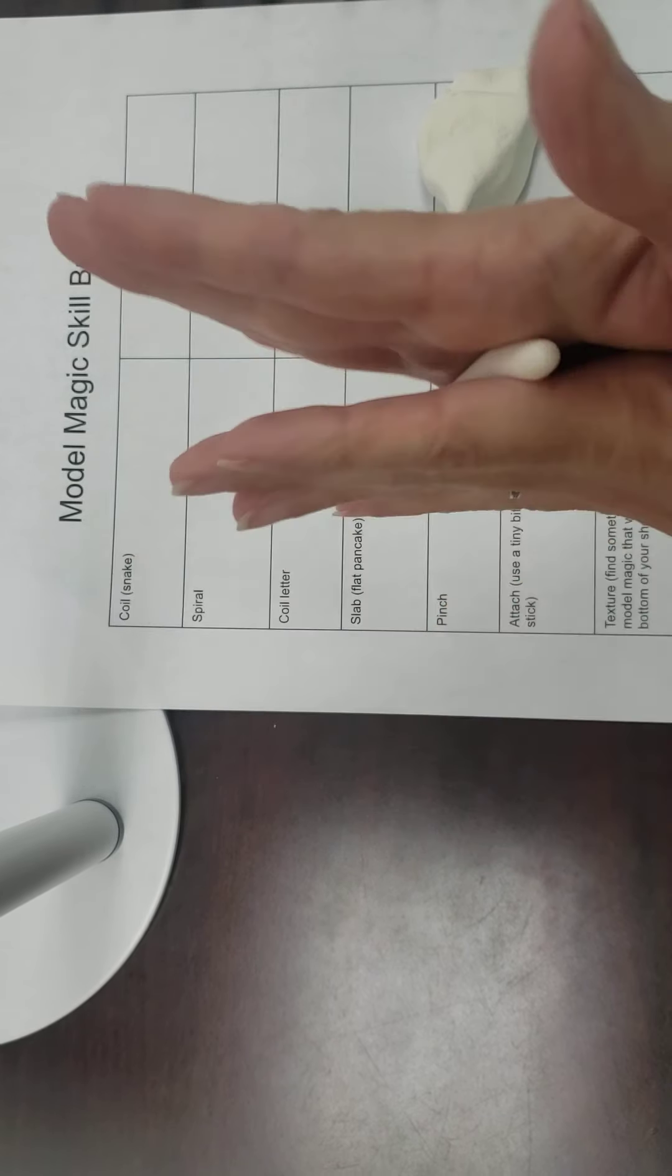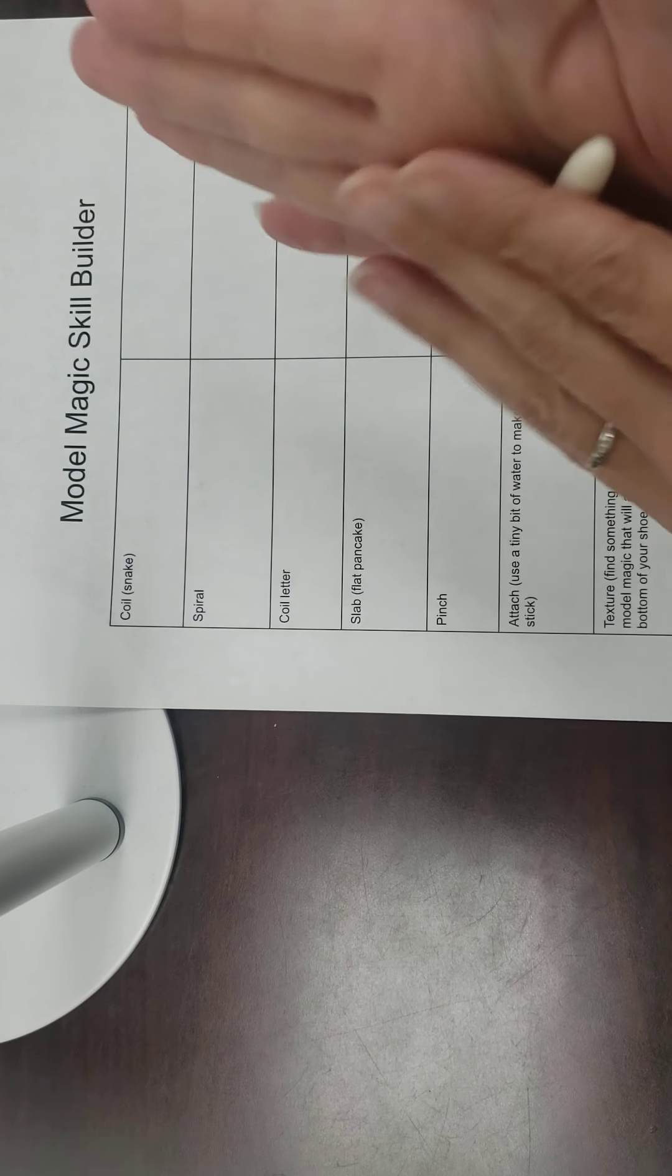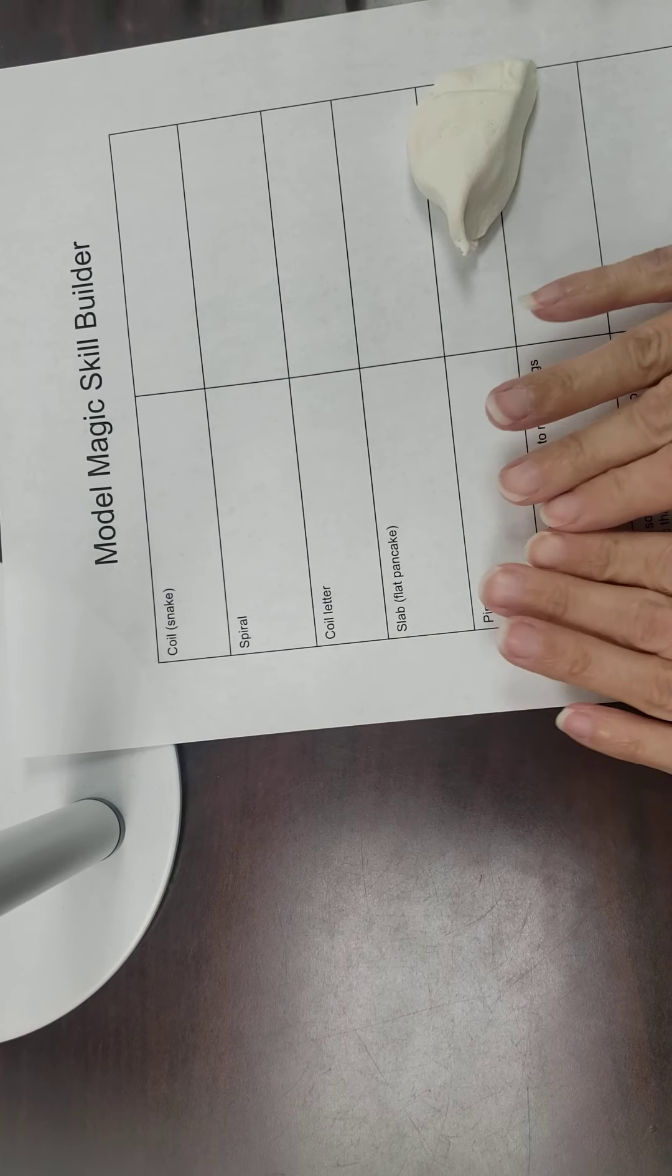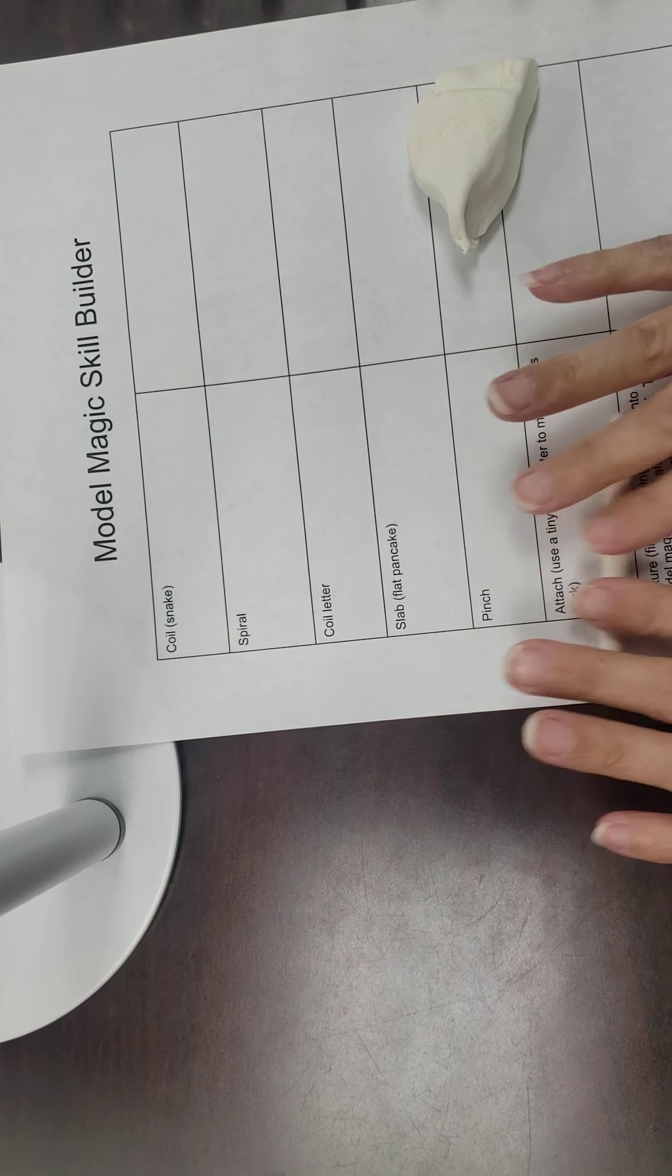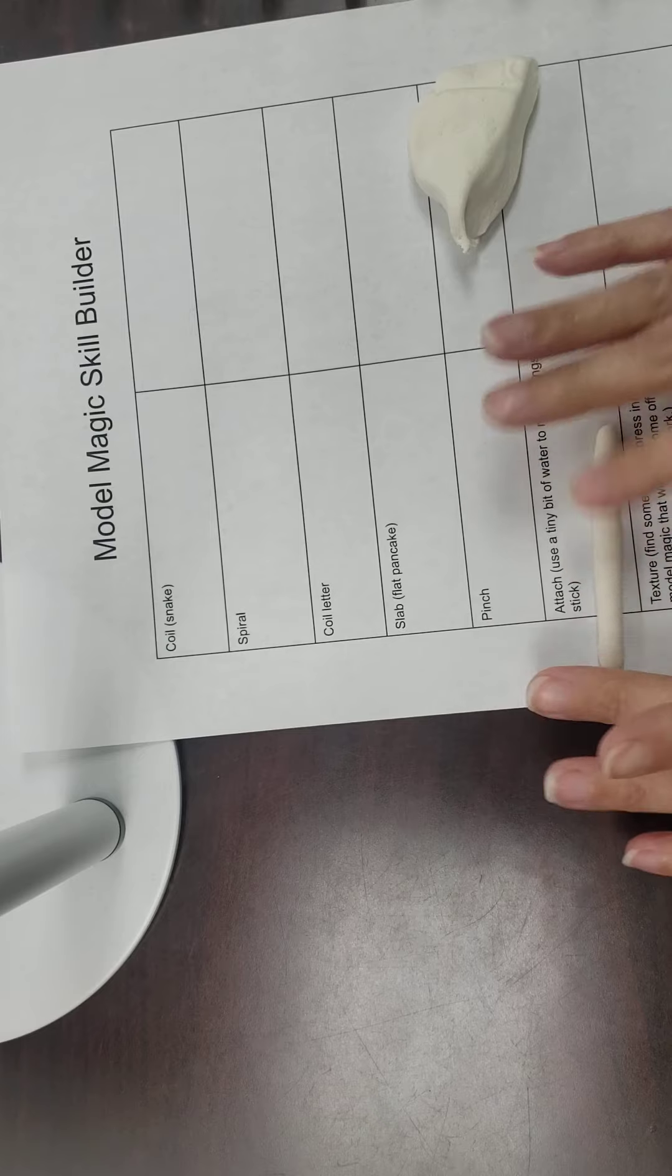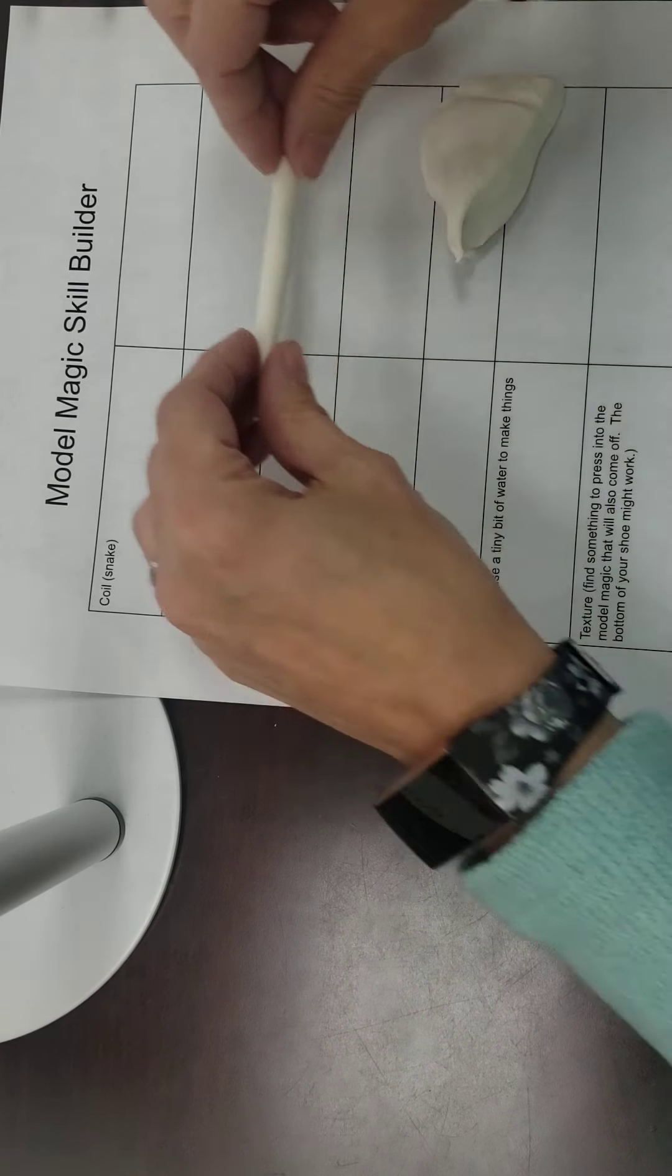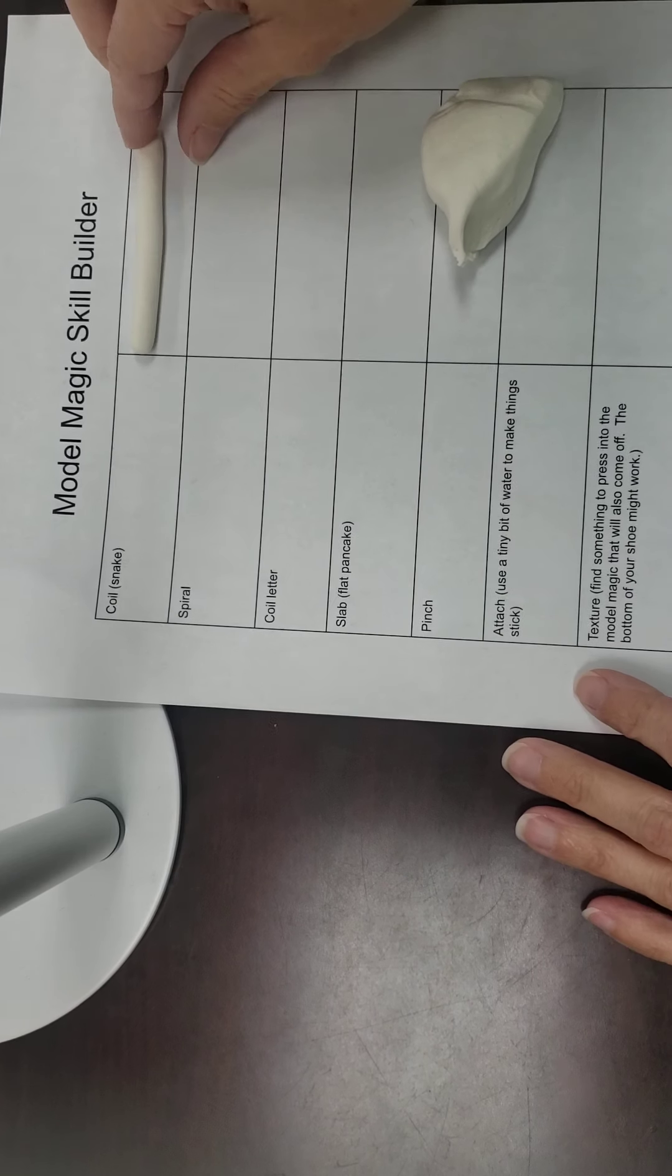So a coil, we're going to start out by rolling it in one direction in my hands, and then you can actually roll it on the tabletop a little bit. You're just pressing down. We want this to be an even thickness as much as possible.